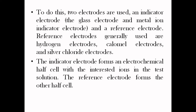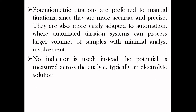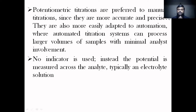The main advantage of potentiometric titration is that it is more accurate and precise compared to ordinary titration, and it is more easily adapted to automation. Another key difference is that we do not use any type of indicators; we directly titrate acid against base, or perform precipitation titrations, and based on the potential-volume relationship we can find the unknown concentration.